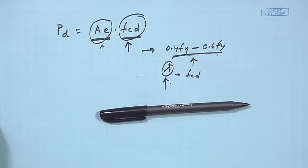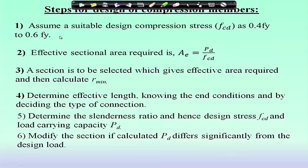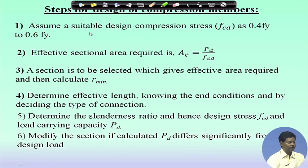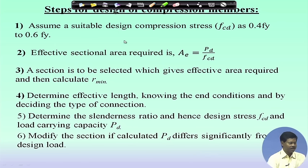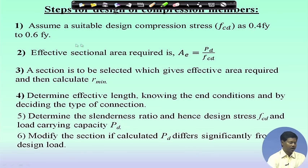Now let us see what steps we should follow. The first step is to assume a suitable design compression stress Fcd — it may be 0.4 fy to 0.6 fy. If the slenderness ratio is less, we can consider the higher side; if it is high, we consider the lower side. But we do not know the slenderness ratio — however, we know the effective length. So if the length of the member is high, we have to choose a lower value.